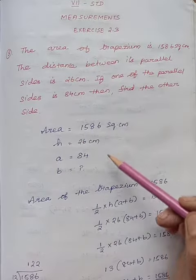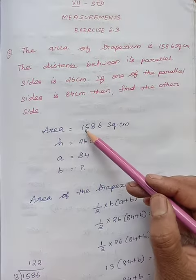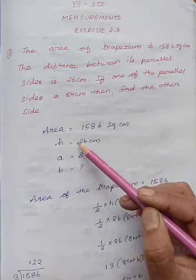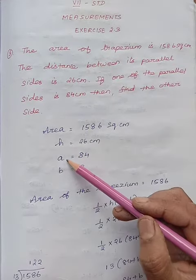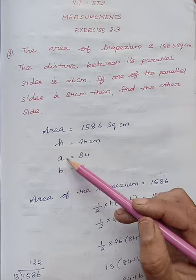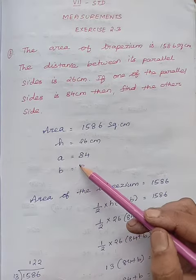So what are the things given in the question? Area is 1586 square centimeters, height is given as 26 centimeters. One of the parallel sides, let the a value be 84 and b value we need to find.